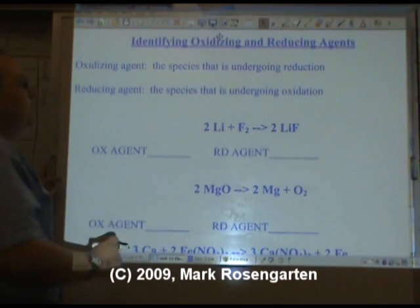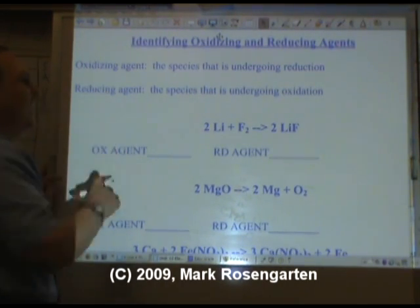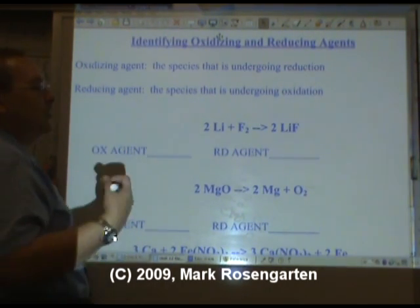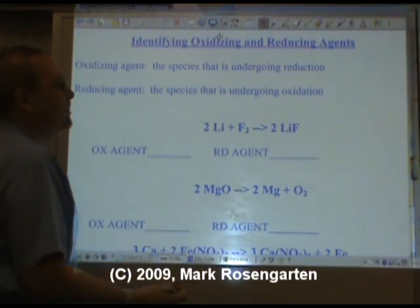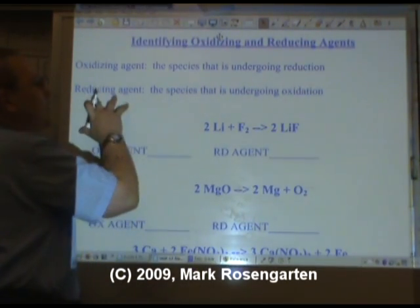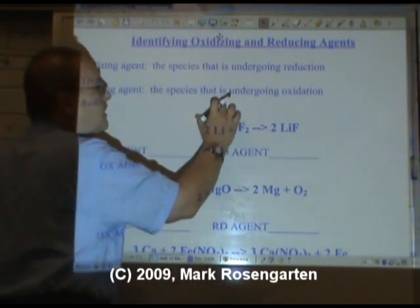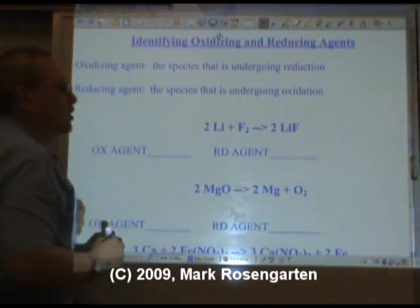Likewise, a species cannot undergo reduction — they can't gain electrons — unless there's another species that's giving up electrons. The reducing agent is the species that undergoes oxidation.